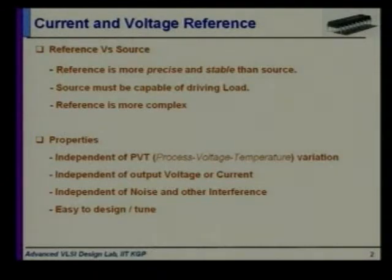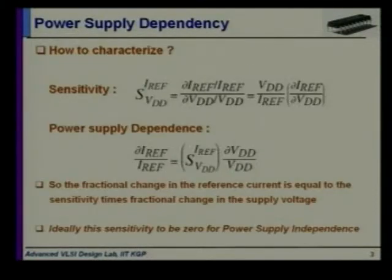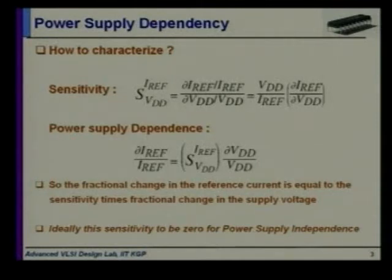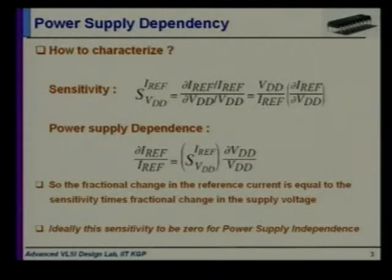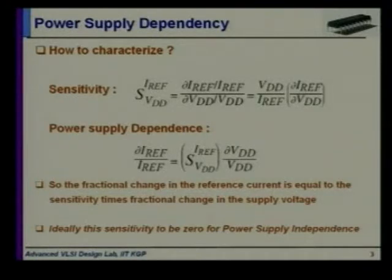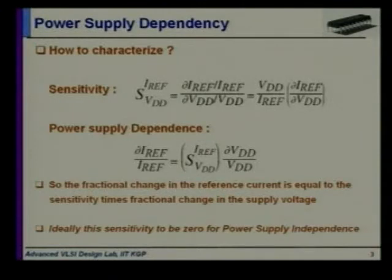It should be easy to design or tune the voltage reference or current reference. Now, we will see what is power supply dependency. Your voltage reference or current reference should be independent of any power supply variations. The sensitivity is defined as the amount by which I-reference or V-reference changes due to a change in supply voltage. Ideally, this sensitivity must be zero for power supply independence — meaning if the supply varies, the reference current should not vary.